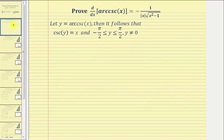To begin, we'll let y equal arc cosecant x. Notice in this equation, x would be the cosecant function value and y would be the angle. Therefore, it follows that cosecant y equals x, where y, the angle, is on the closed interval from negative pi over two to positive pi over two, and y cannot equal zero.